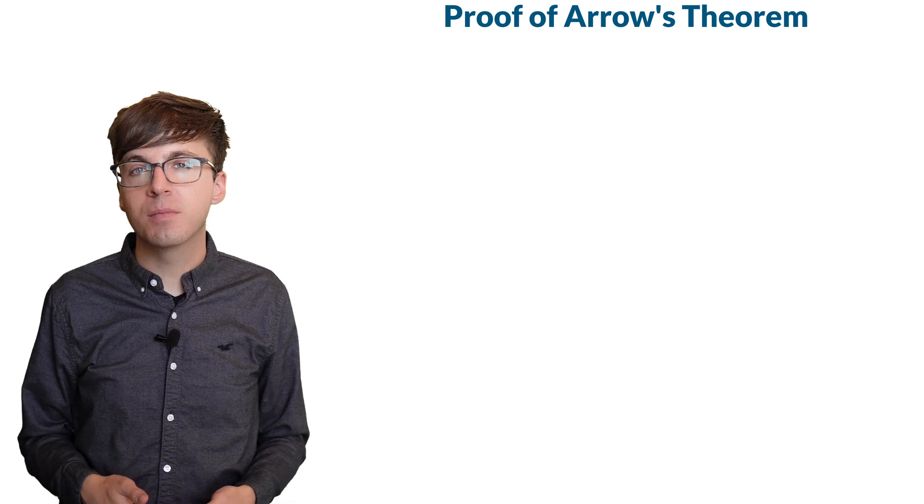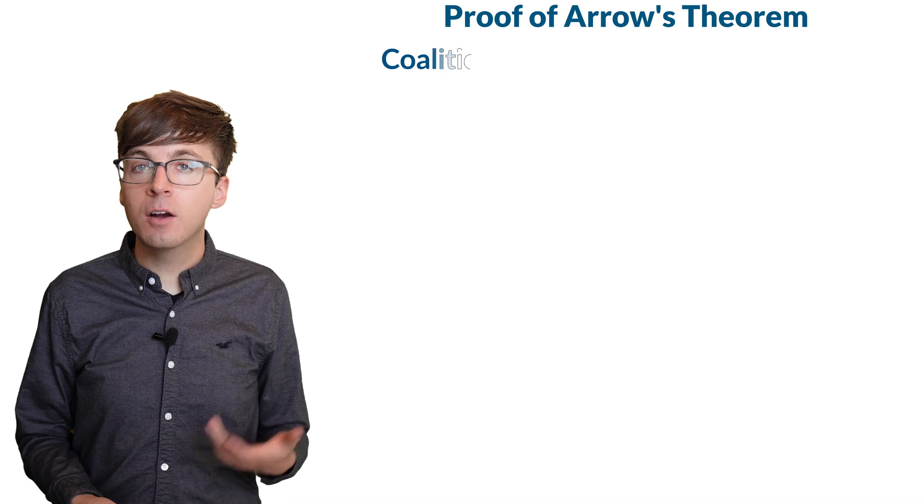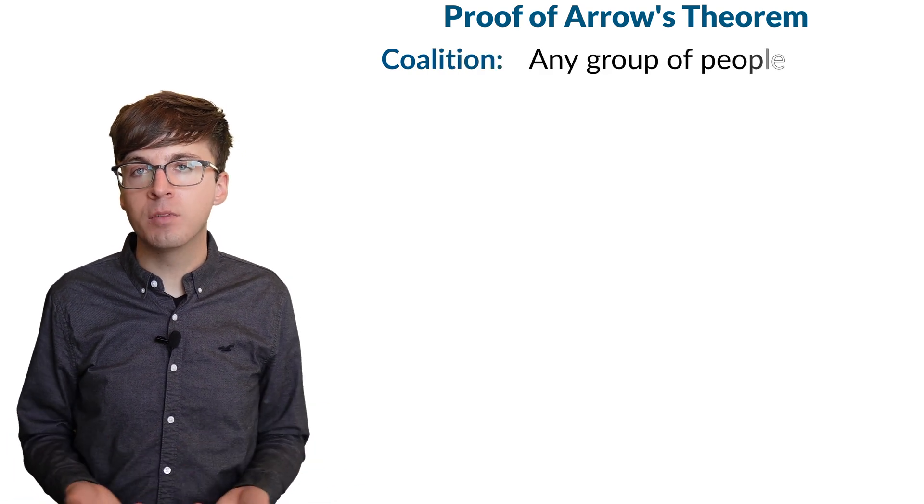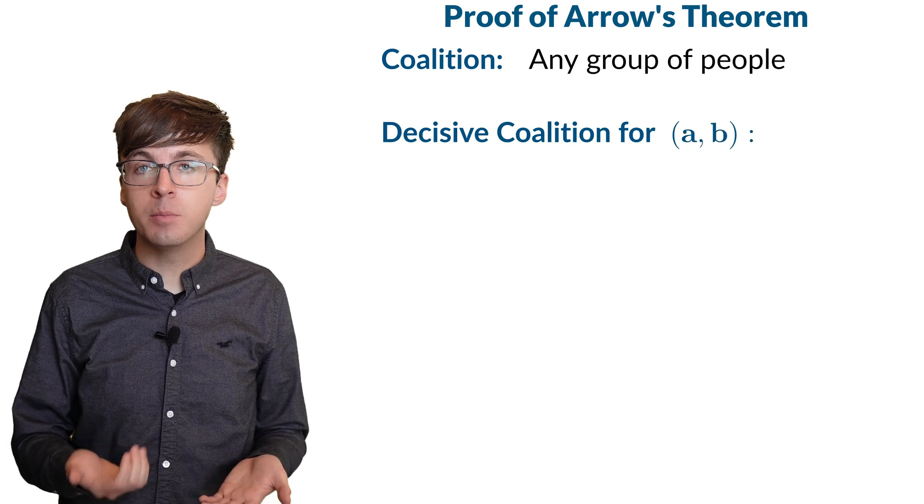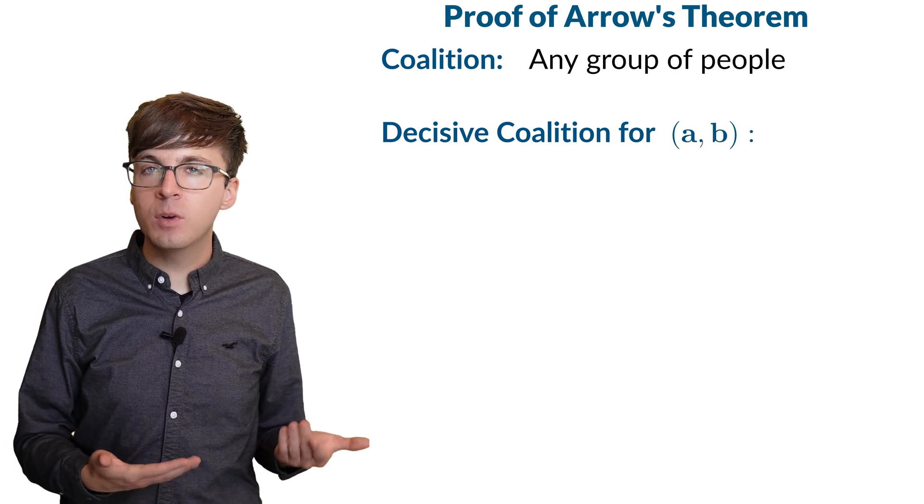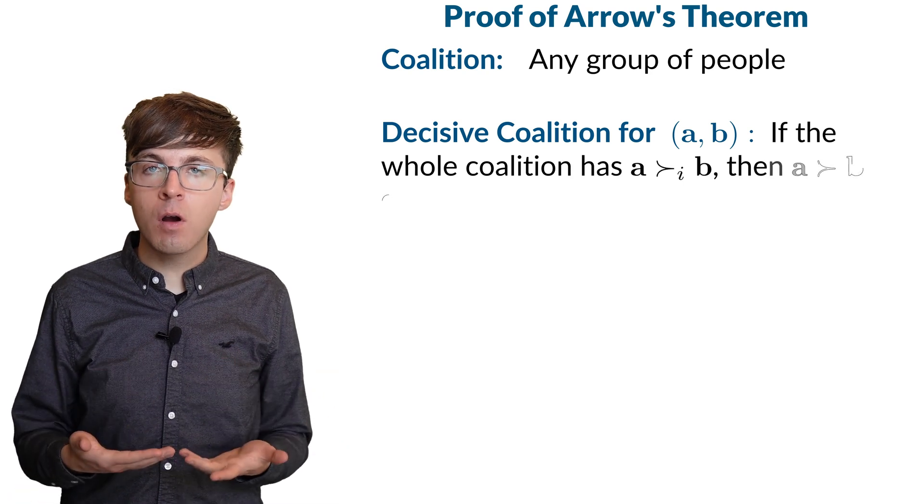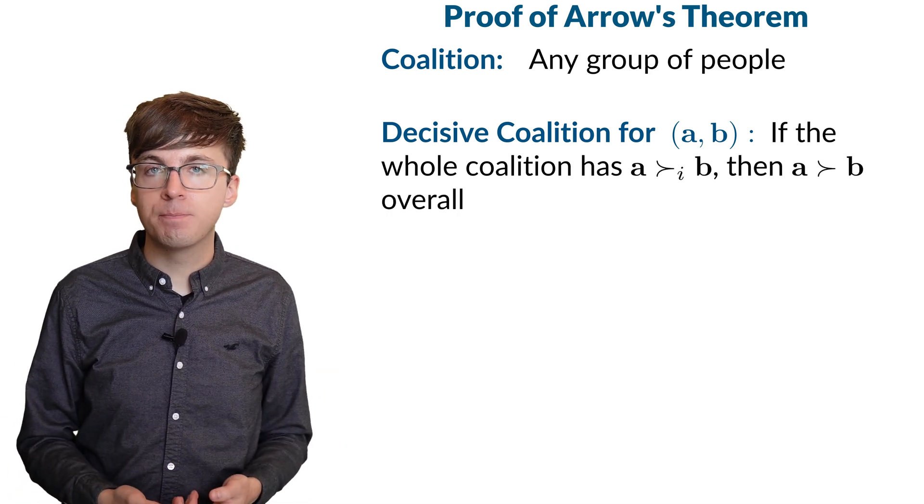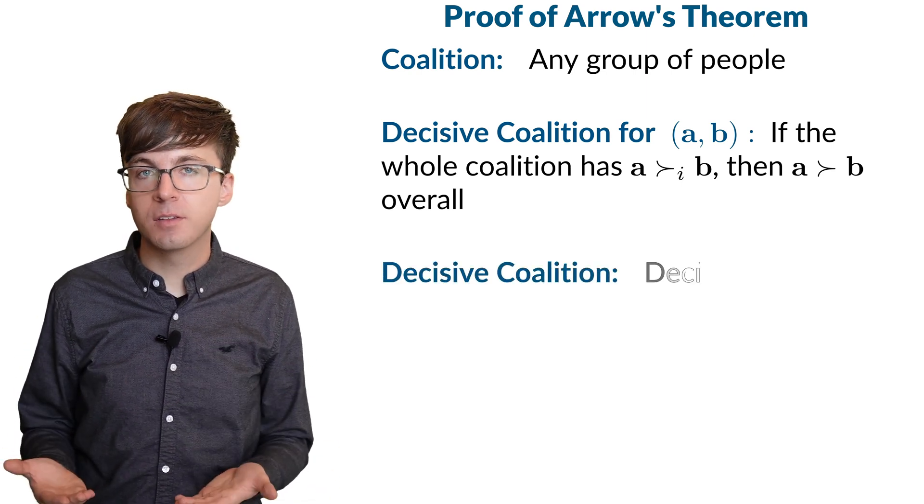Now, let's get back to the proof of Arrow's impossibility theorem. The main idea is a decisive coalition. A coalition is any group of individuals. A coalition is called decisive for AB if, when everyone in the coalition ranks A above B, then the group overall will rank A above B. If a coalition is decisive for all pairs, then we just call it decisive.